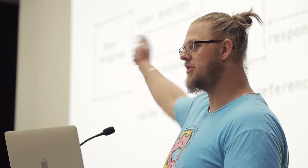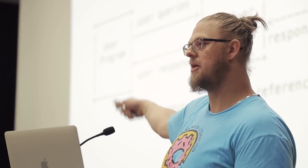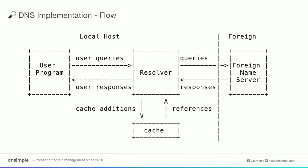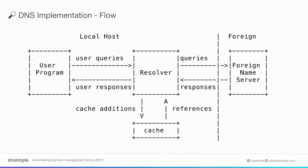So this is just one flow diagram out of the RFC, and this is basically what I just showed you. The only difference is it shows the resolver locally — that's a so-called stub resolver. And then the foreign name servers are kind of a black box, as they might appear to your computer, because you probably don't know what's going on there.